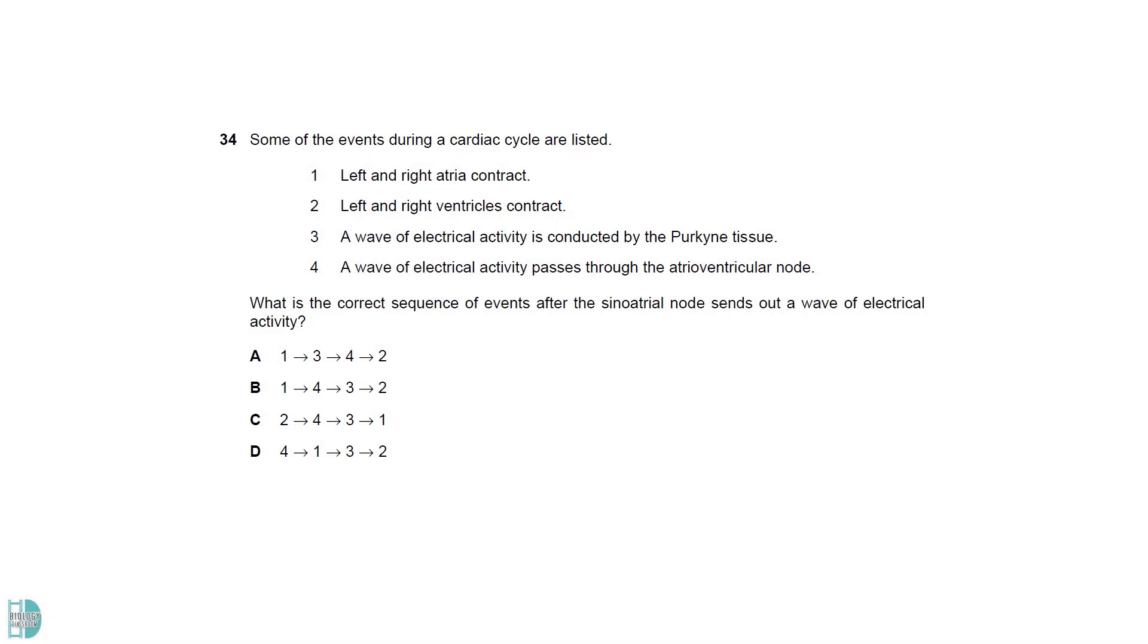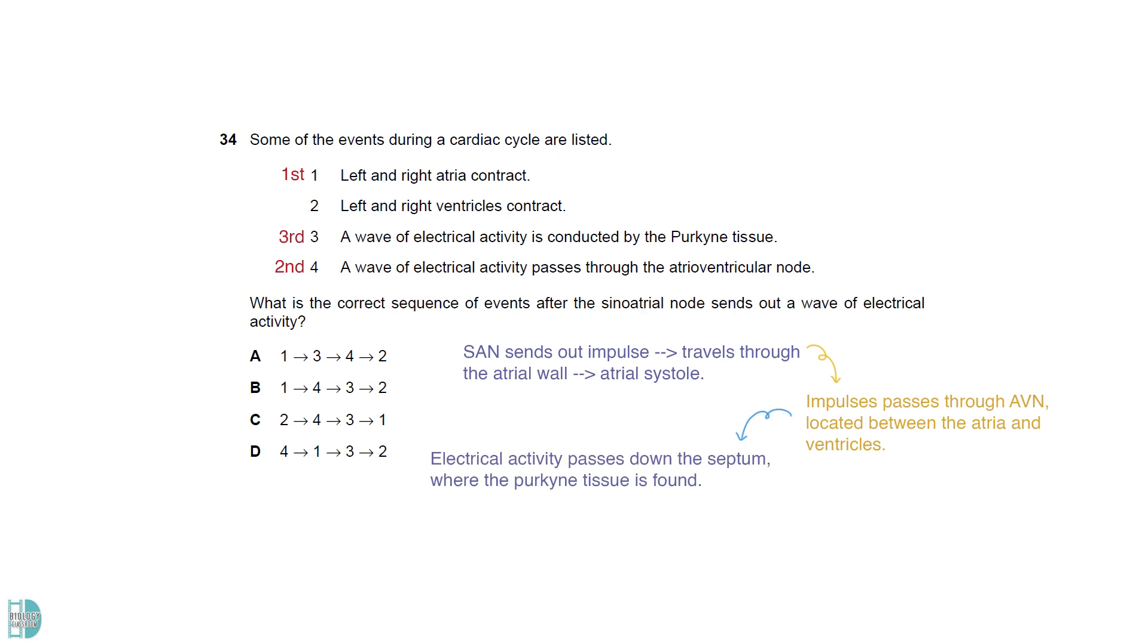After the sinoatrial node sends out the impulse, it travels through the atrial wall leading to atrial systole. Then, it passes through AVN which is located between the atria and ventricles. The electrical activity will pass down the septum where the Purkinje tissue is found. The tissue conducts the wave across the ventricular walls causing ventricular systole.